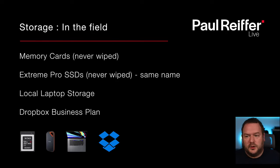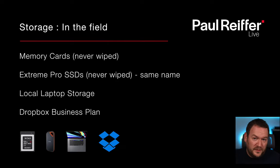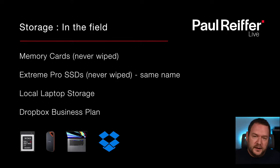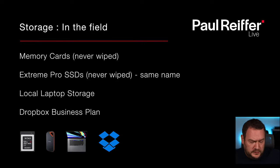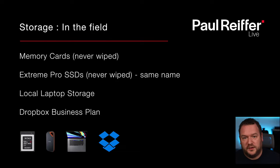Local laptop storage obviously - so when out and about I've got my MacBook with local storage. Those are my three items. Whenever I'm connected, we'll connect up to Dropbox - we have a business plan with a lot of space. My laptop, whenever it's on the network, will sync everything I capture - all the raw data and Capture One files up to the cloud.